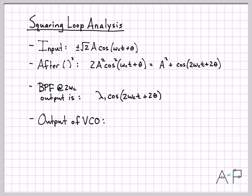Alright, so I get the output. What about the output of the VCO? The output of the VCO has the form root 2 beta cosine omega ct plus theta hat.